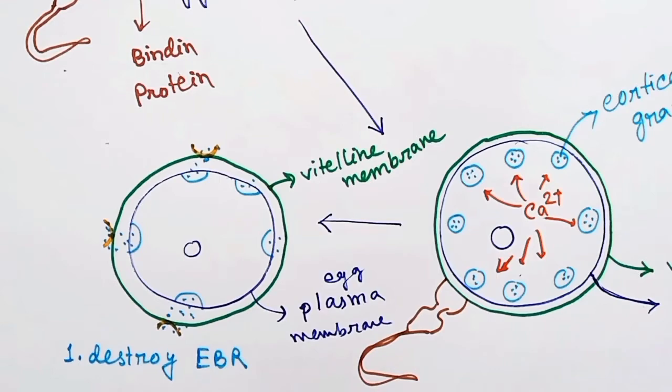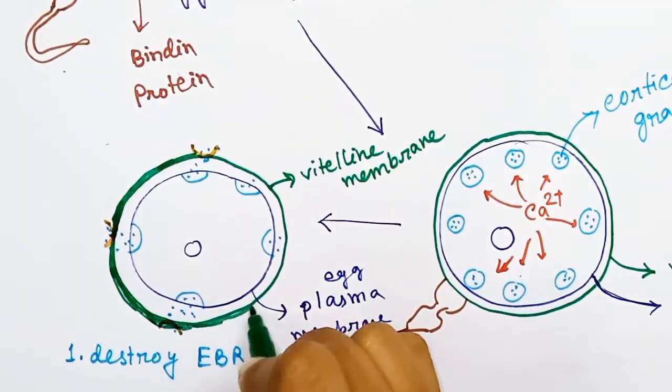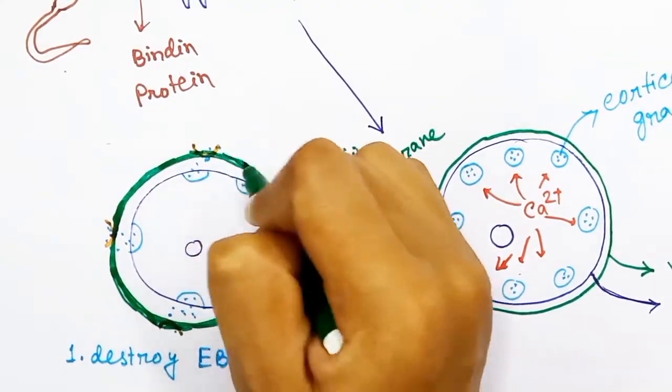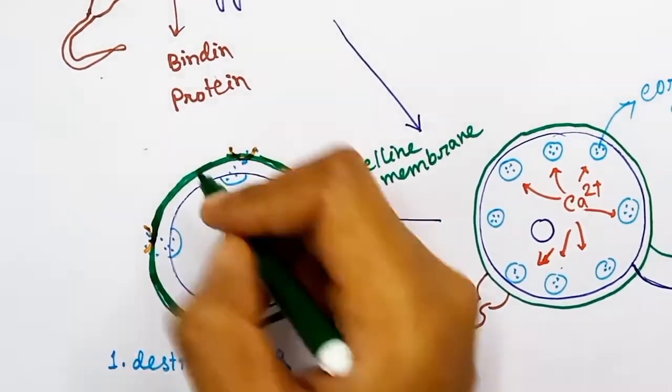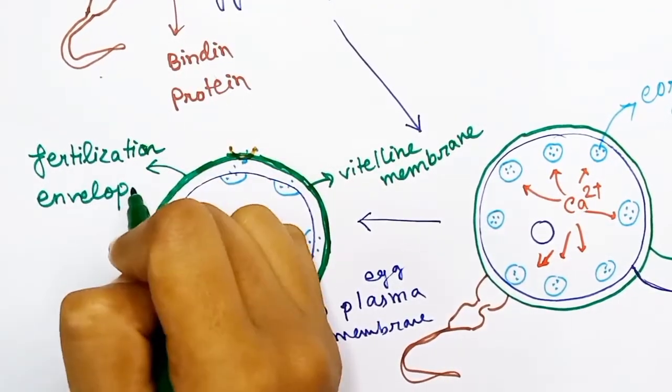In the next step, the vitaline membrane is thickened by the chemicals present in the cortical granules. This thickened vitaline membrane is now called fertilization envelope. This will prevent the penetration of further sperms inside the ovum.